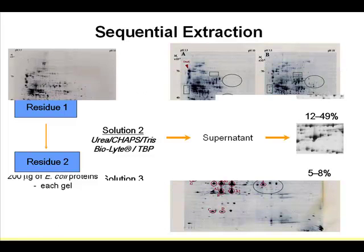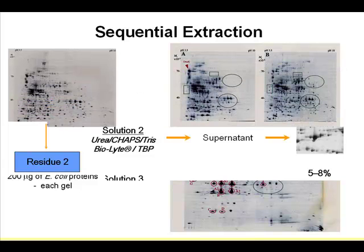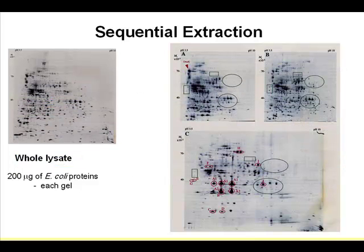This is the total gel view from all three extractions — first, second, and third. This is how you get different protein population patterns from each sequential extraction.